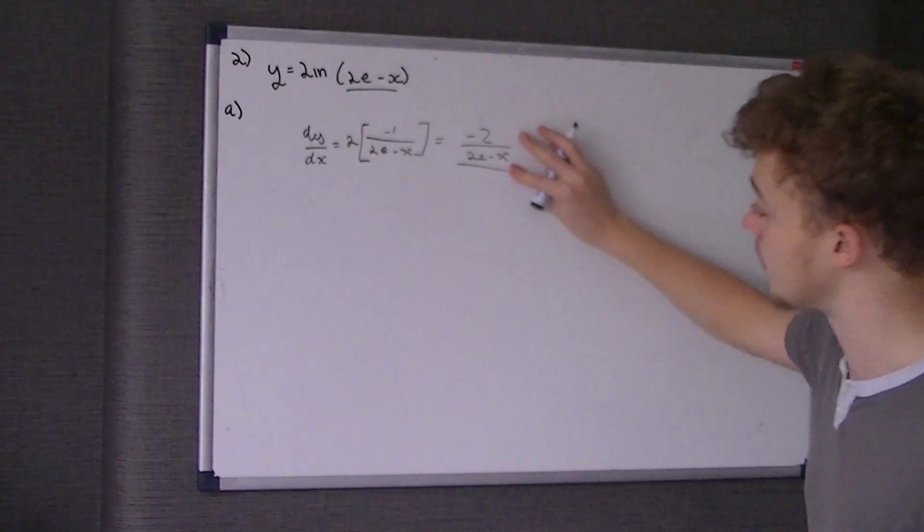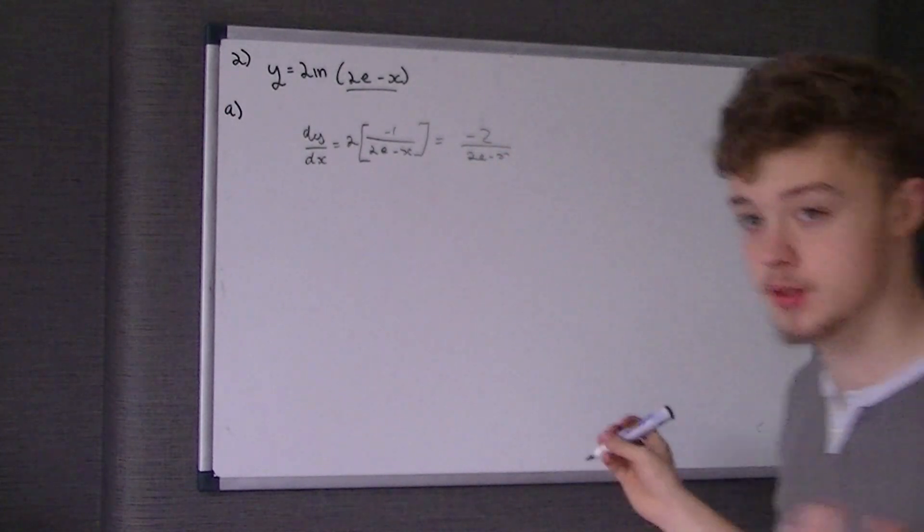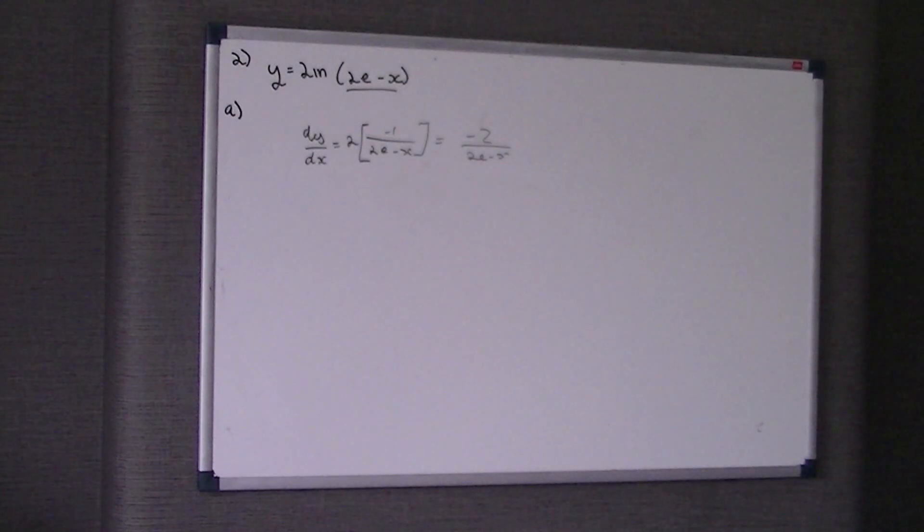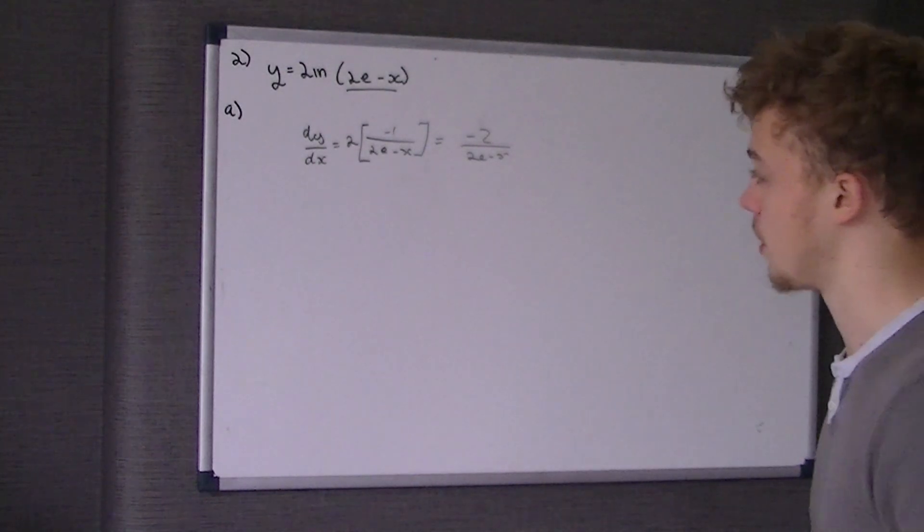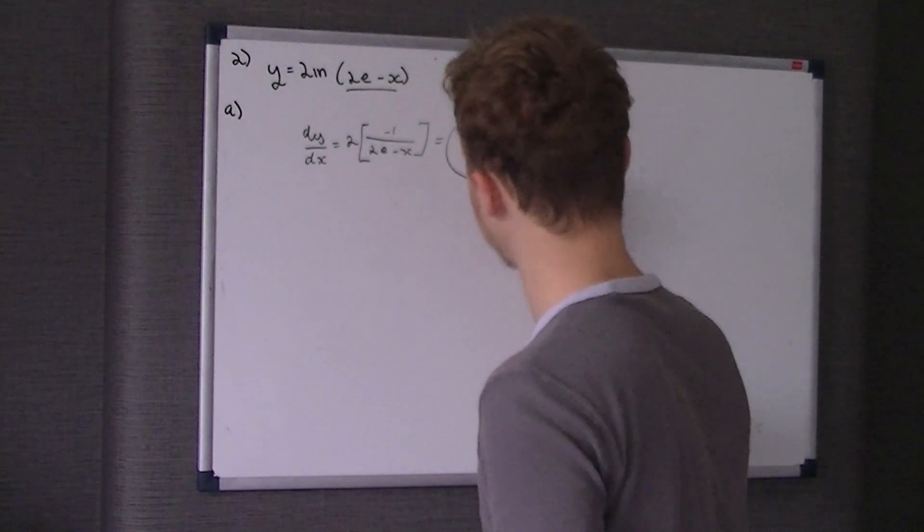That's all it wanted, didn't want us to do anything else with that just yet. That's question A, that's two marks. The next part, part B, says find the equation of the normal to the curve.